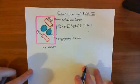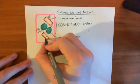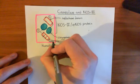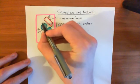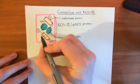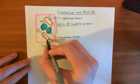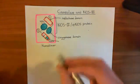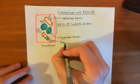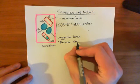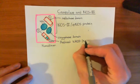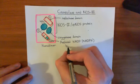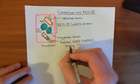If we add a bit more detail, the reductase domain has three major binding sites we should be aware of. At the end near the carboxyl terminus is the reduced NADP binding domain — reduced NADP is often denoted as NADPH, so NADPH means reduced NADP. That is where the reduced NADP binds.